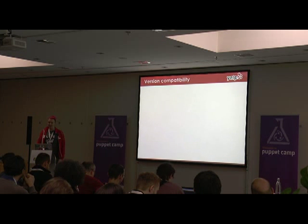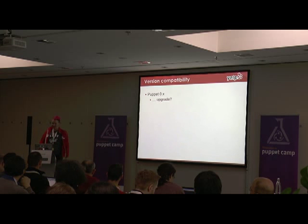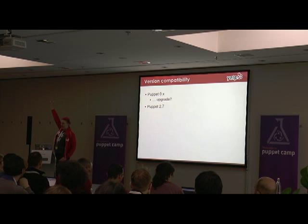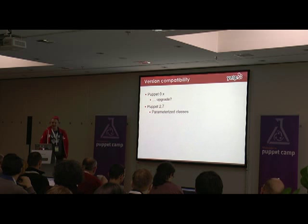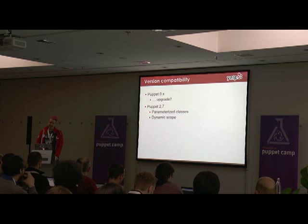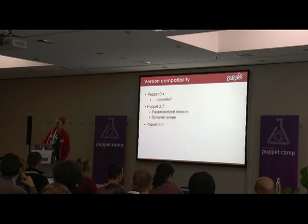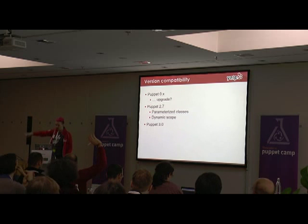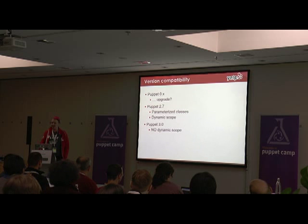Let's talk about Puppet versions. Who is still running Puppet 0.something? Upgrade. Who is still running Puppet 2.7? I'm doing this at work. Puppet 2.7 over Puppet 0.anything — the key introduction was parameterized classes, and those make your life a whole bunch easier. The key killer thing with Puppet 2.7 code is dynamic scope. Puppet 3 — most people are on Puppet 3-ish at the moment. The key thing is that Puppet 3 does not have any dynamic scope, so if you are using dynamic scope, your code will break when you upgrade.